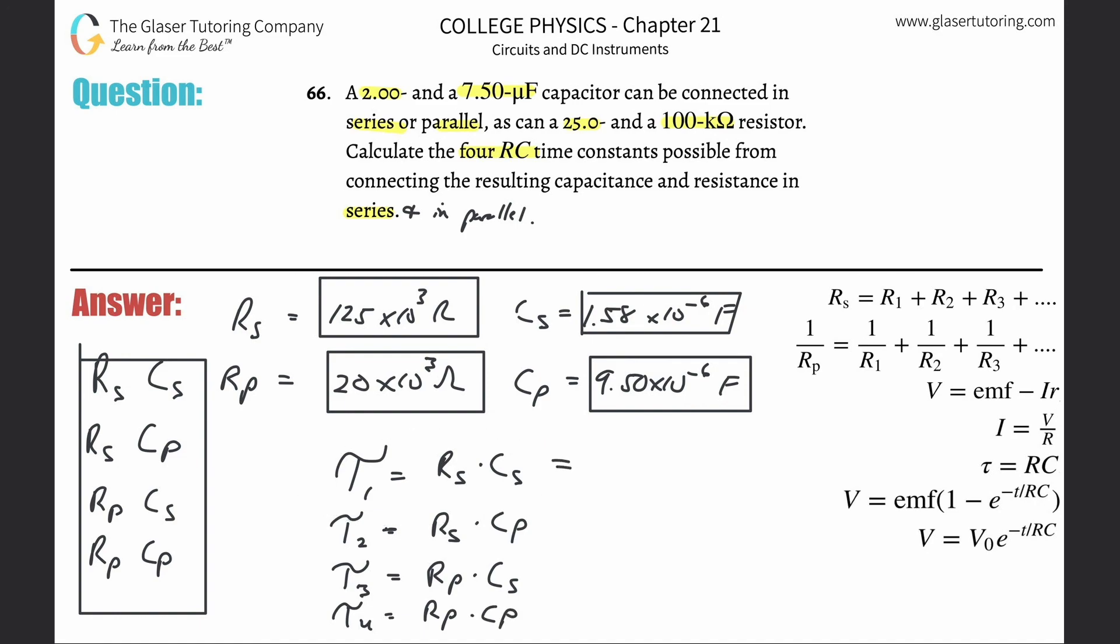Resistance in series was 125 times 10 to the third. Multiply that by capacitance in series, which is 1.58 times 10 to the minus sixth. So we have 125 times 10 to the third times 1.578947368 times 10 to the minus sixth. We get a value of about 0.197 seconds. That's the time constant. Now all you got to do is use these numbers, plug them into your calculator, and you're good to go for the rest.